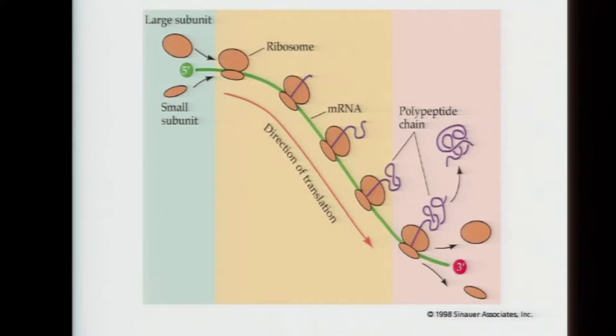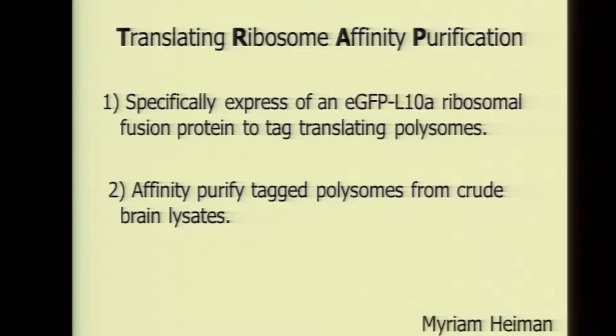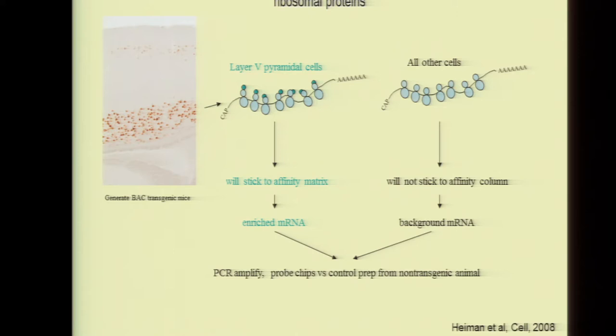So we invented a method called TRAP. It's dependent on a very simple principle: all proteins made in any cell are made on ribosomes. It follows that if you tag a ribosome — in this case with GFP so we can do nice anatomy — and express it in a specific cell type, and then isolate those ribosomes from that cell, you can identify every message that was being translated in that cell at that time.